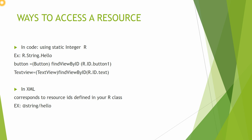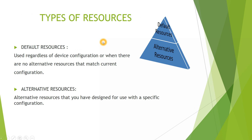There are two ways to access a resource. In your code, you can use the static integer R — for example, button.findViewById(R.button). The other way is through an XML file, for example @string/hello, where everything corresponds to a resource ID defined in your R class. There are also two types of resources: default resources and alternative resources.